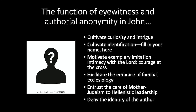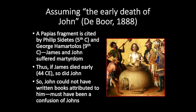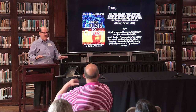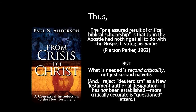Rudolf Bultmann argued here we have the entrustment of Judaism to the Hellenistic mission. Some scholars assume the early death of John. De Boer wrote an article in 1888; a Papias fragment cited by Philip Sidetes (5th century) and George Hamartalos (9th century) claims James and John suffered martyrdom. Therefore, if James died in 44, John must have died at the same time — and so John could not have written books attributed to him. That's the one assured result of critical scholarship: John the Apostle had nothing to do at all with the gospel bearing his name.